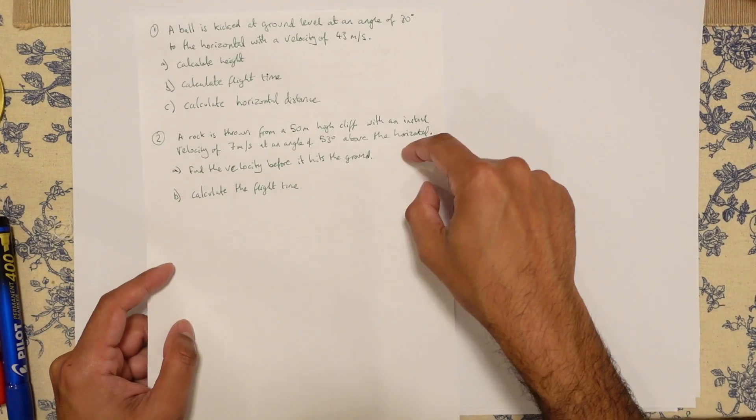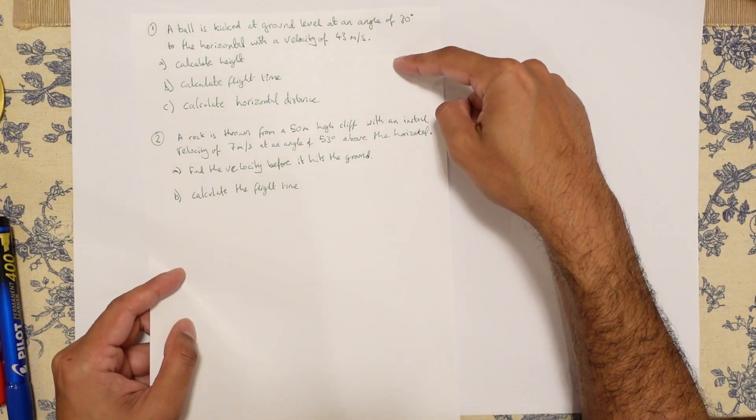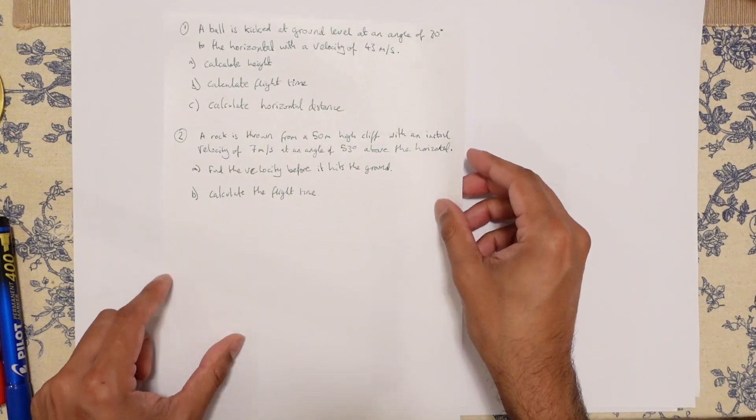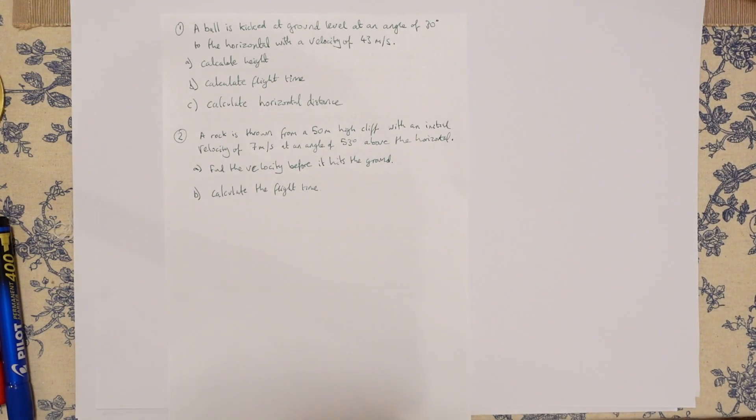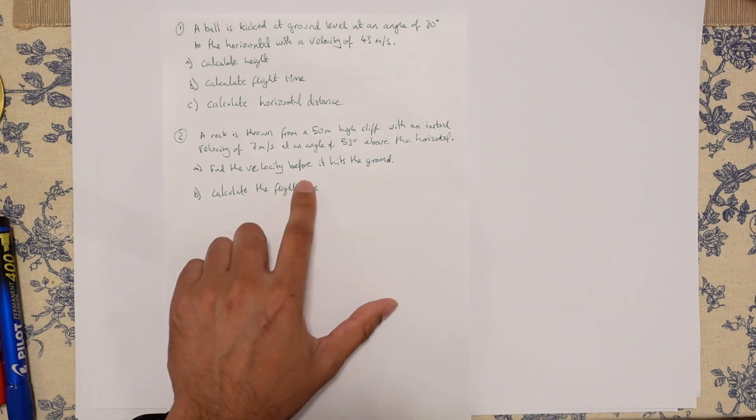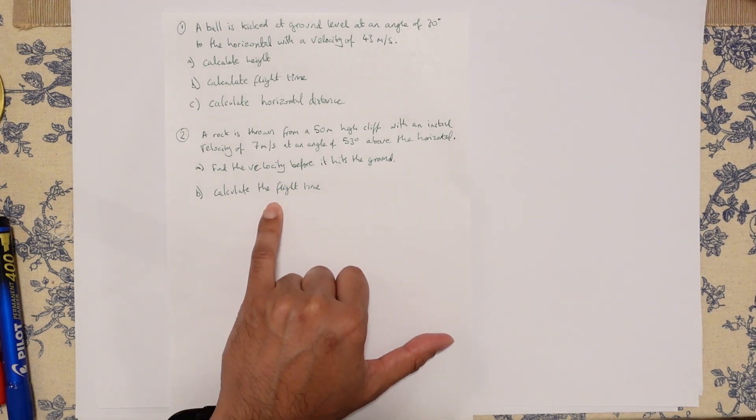So we're doing this question. I've done this one in the previous video. It says a rock is thrown from a 50 meter high cliff with an initial velocity of 7 meters per second at an angle of 53 degrees above the horizontal.